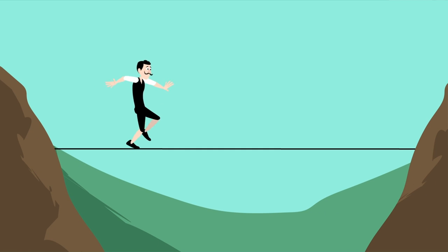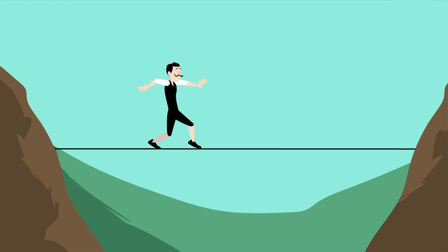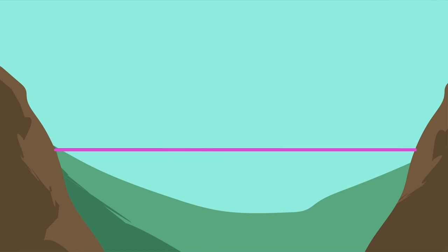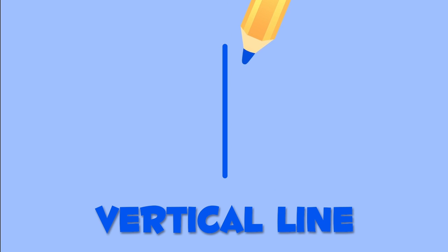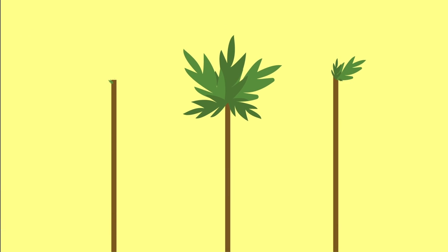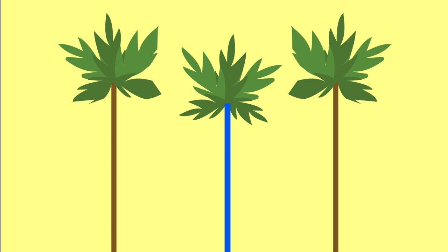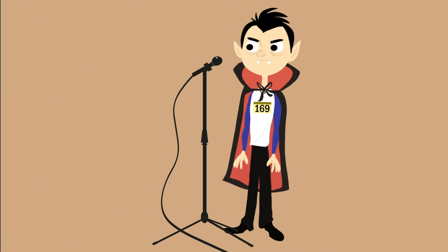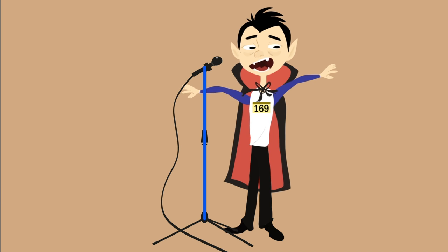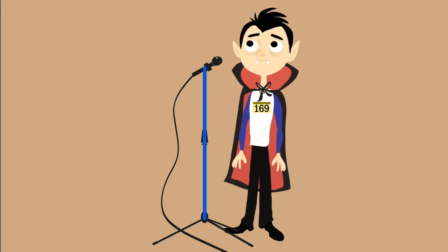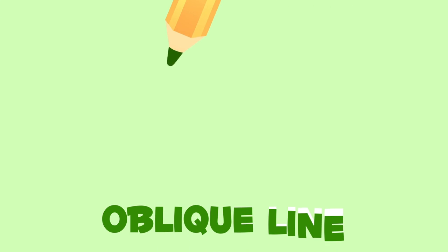Like the tightrope of an acrobat — whoops! Now this is a vertical line. Vertical lines look like the trunk of this palm tree or like this microphone stand. This is an oblique line.